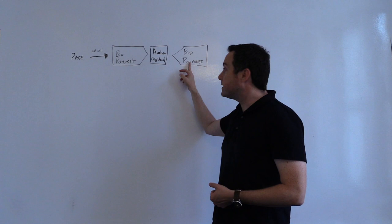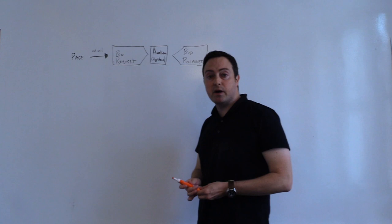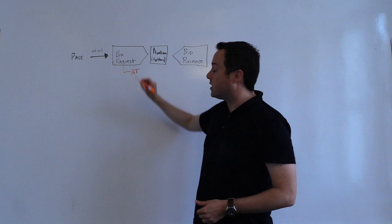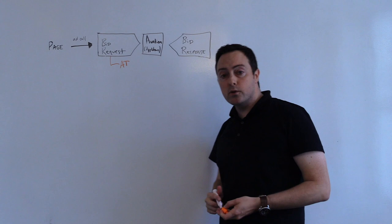So here's what's changing. This bid request today contains a number of signals about the page, about the user, and we're adding to that an additional signal about the auction type that I'll get into more depth later. This will tell the bidder what kind of auction they can expect. And then in turn, the bidder will adapt their response, which we can take into account in the auction.